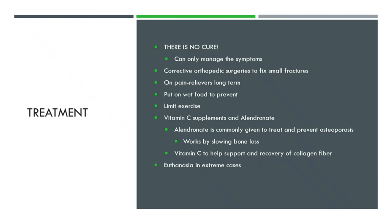There is no cure for osteogenesis imperfecta — once diagnosed, the animal has it for life and only the symptoms can be managed. Treatment options include corrective orthopedic surgeries for fractures, lifelong pain relievers, switching to wet food to prevent tooth damage, and limiting exercise to reduce fracture risk. Emerging studies suggest that adding a vitamin C supplement and alendronate may help — alendronate is commonly used to treat osteoporosis and works by slowing bone loss, while vitamin C supports recovery of collagen fibers. These treatments are being translated from human medicine into dogs. In more severe cases, the only humane option is euthanasia.